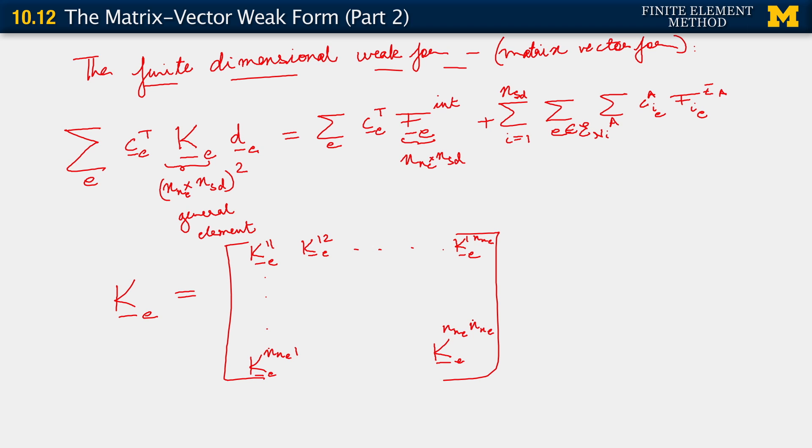For a trilinear element we would have 8 by 8 blocks - 8 blocks along the column direction and 8 blocks along the row direction. Each would be a 3 by 3. Each of these is 3 by 3, well it's actually NSD by times NSD.